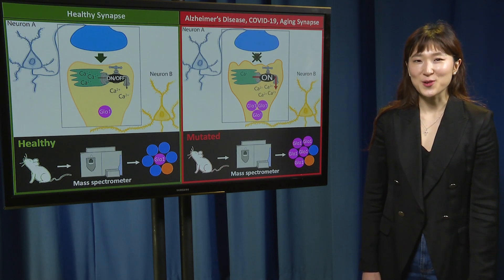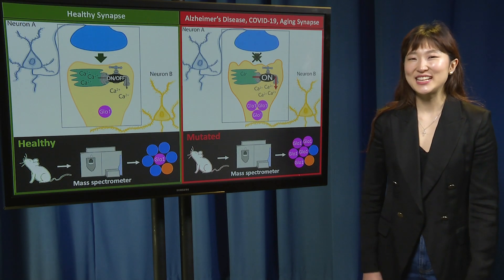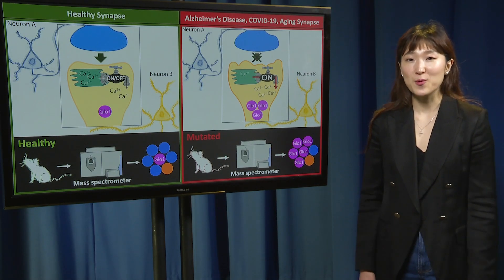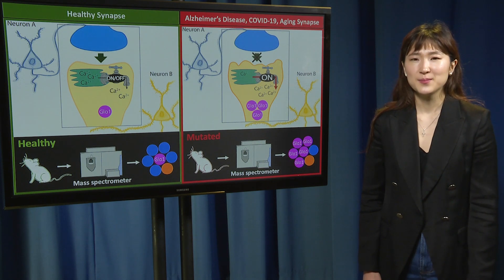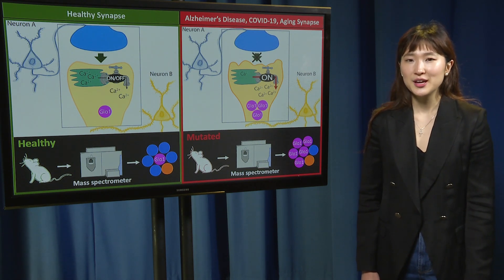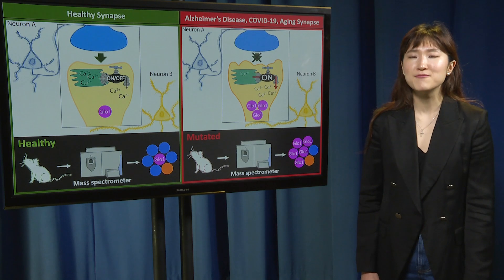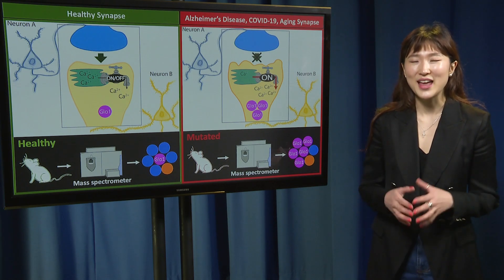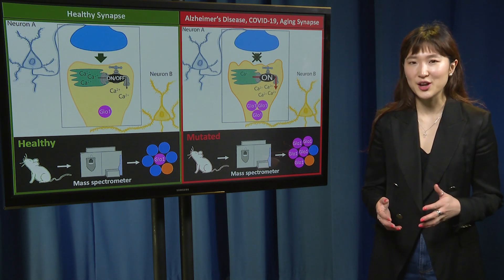Oscar Wilde once wrote, memory is the diary that we all carry about with us. But many of us won't get to keep our diaries forever. By 2050, 12.5 million Americans will have Alzheimer's disease, and we still don't have any preventative therapies.